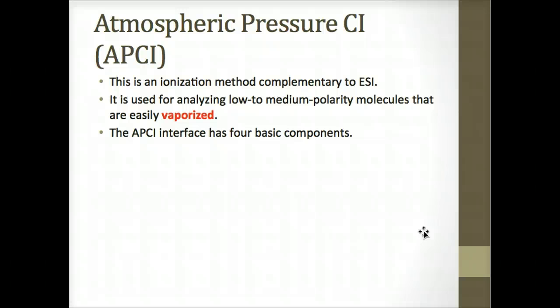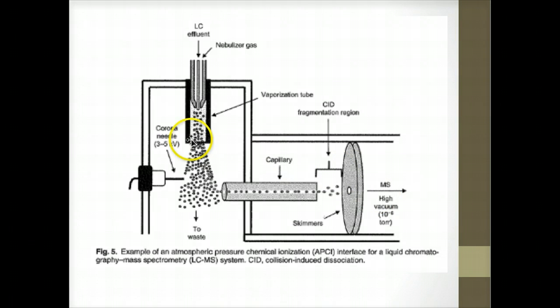Here's atmospheric pressure chemical ionization. This is an ionization method complementary to electrospray ionization, very similar. So APCI is used for analyzing low to medium polarity molecules that are easily vaporized. It is also best that analytes do not contain acidic or basic sites. Compounds can be moderately volatile. And the atmosphere pressure chemical ionization interface has four components: the nebulizer, vaporization tube, the corona needle, and the desolvation module. Very similar to what we've seen before. The liquid mobile phase enters the nebulizer and flows through the needle assembly. And the nebulizer blows high pressure nitrogen around the needle and blasts the mobile phase into a fine aerosol. So it enters in right here, gets blasted, and goes through this corona needle through the capillary again into a chamber for CID to occur.